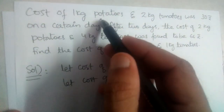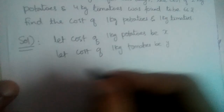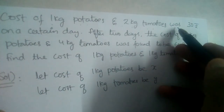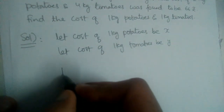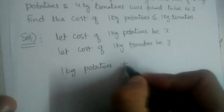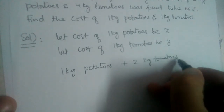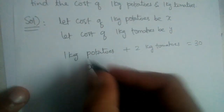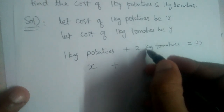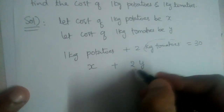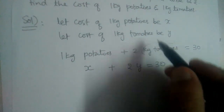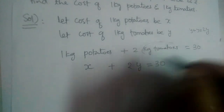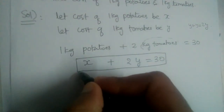In the first case, we are buying 1 kg potatoes and 2 kg tomatoes, right? So the first equation will be: 1 kg potatoes plus 2 kg tomatoes is equal to 30 rupees. Cost of 1 kg potatoes is x, and cost of 2 kg tomatoes will be 2y. So the first equation is x plus 2y is equal to 30.